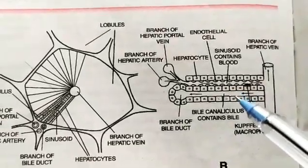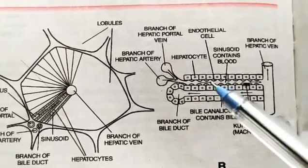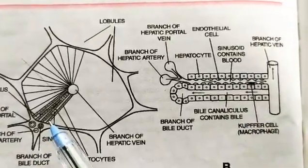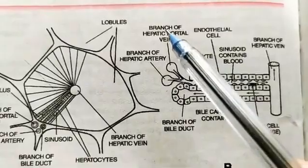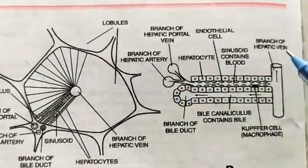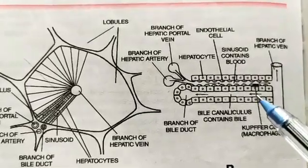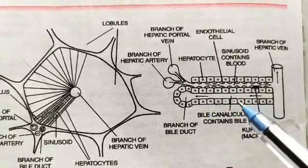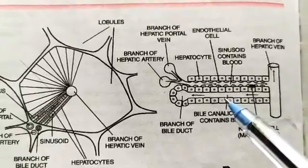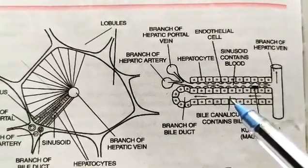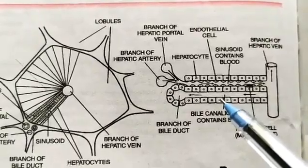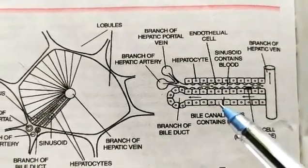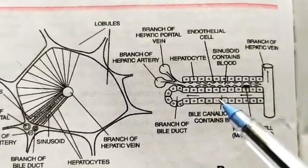This diagram from the longitudinal side shows the branch of the hepatic portal vein, the branch of the hepatic vein, and the bile canaliculi which contains the bile. Bile is the enzyme secreted by the liver, which is very helpful in the digestion of food. Bile is stored in the gallbladder.